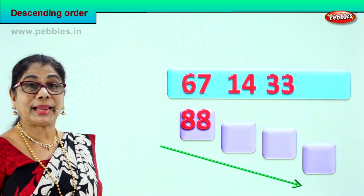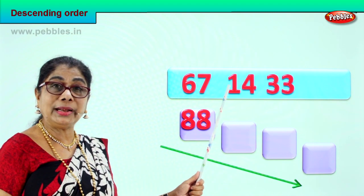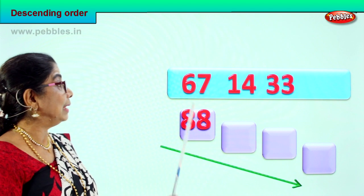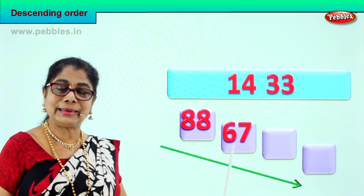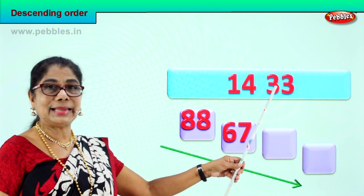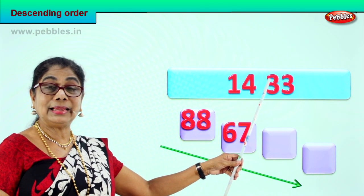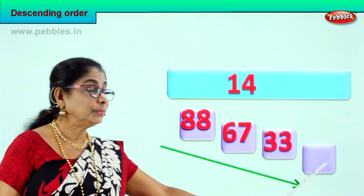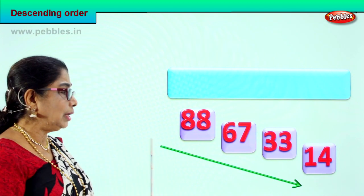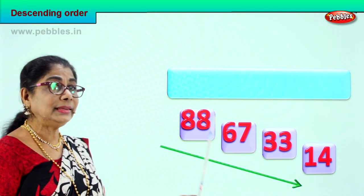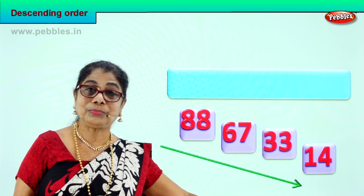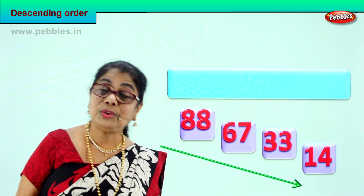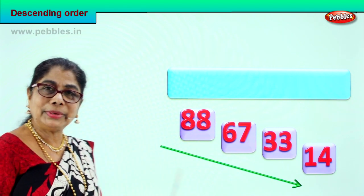Now we will again check which number comes next. We have three tens, one ten and six tens. The next bigger number is six tens, seven ones — that comes second. Next we have one ten and three tens, so we take three tens, three ones and place it here. Finally one ten, four ones comes last. Now we have arranged all the numbers in descending order — eight tens, six tens, three tens and one ten going right down.